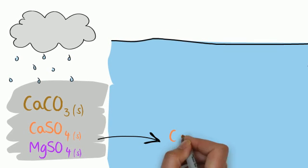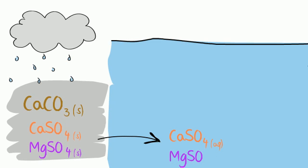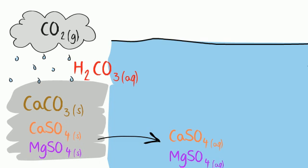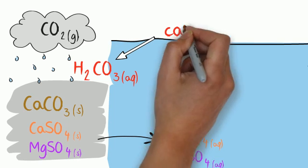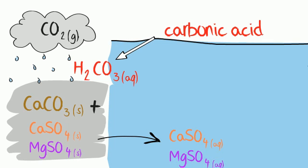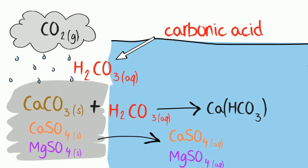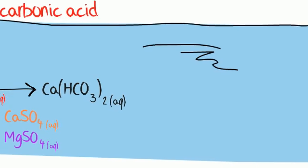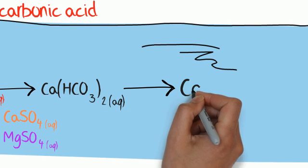Rainwater becomes acidic because carbon dioxide gas dissolves in it. This forms carbonic acid. The weak carbonic acid slowly reacts with and dissolves away the calcium carbonate in the rock as it passes over to form calcium hydrogen carbonate.